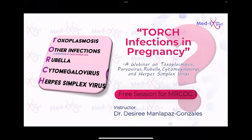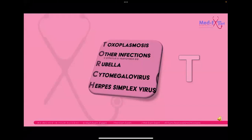TORCH stands for Toxoplasmosis, Other infections, Rubella, Cytomegalovirus, and Herpes Simplex Virus. For the 'Other infections,' you can include any infections that cause a problem in the neonate or fetus. For this webinar, I chose Parvovirus B19. I did not choose syphilis because there is a whole webinar on syphilis accessible on our Medics Expert YouTube channel.